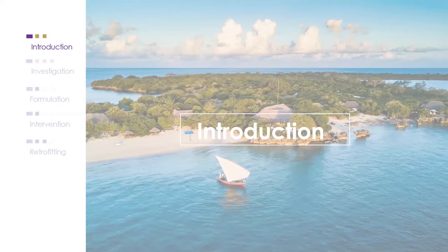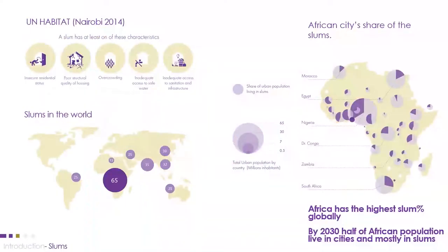Smart Without Slum focuses on the often neglected medium-sized cities, specifically in the case of Africa. We started our thesis work by understanding the definition of slums. UN-Habitat puts five characteristics to identify slum settlements, such as insecure residential status, poor structural quality of houses, overcrowding. When we see the global share of slums, Africa has the highest percentage at 65%, followed by Asia.